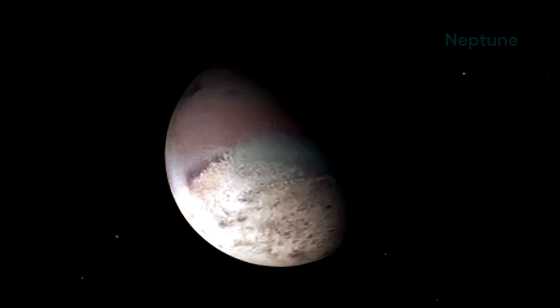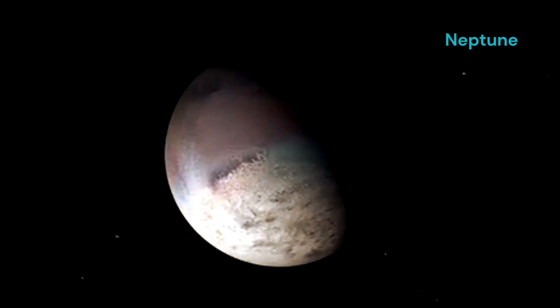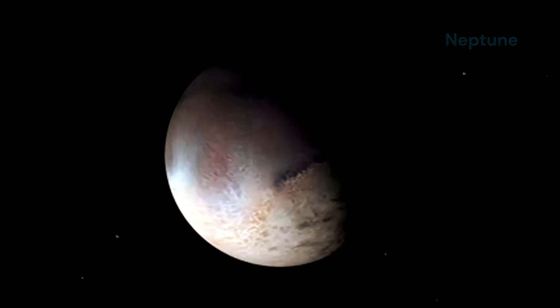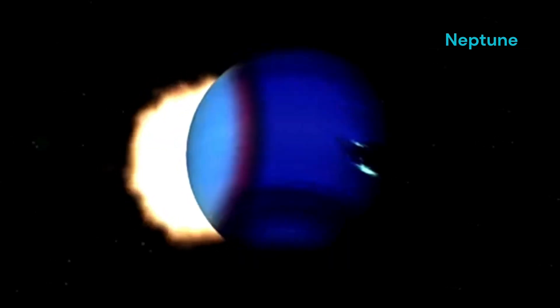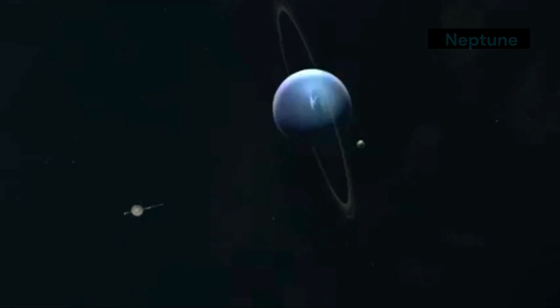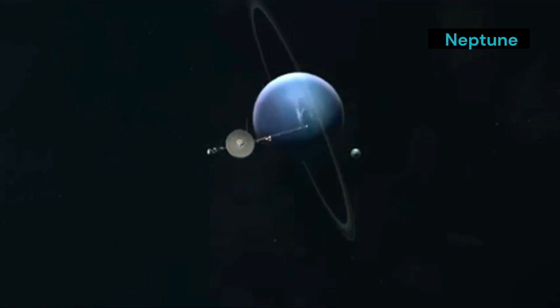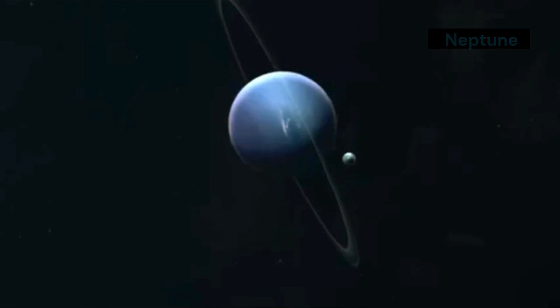Neptune is also home to 14 known moons, the largest of which is Triton. Triton is a fascinating world in its own right, with geysers that spew nitrogen gas and a surface covered in ice. Much of what we know about Neptune comes from the Voyager 2 spacecraft, which flew by the planet in 1989. This mission provided us with invaluable data and stunning images of the blue giant.